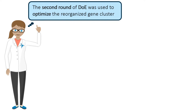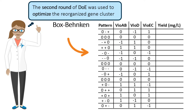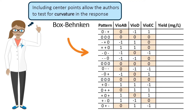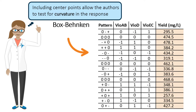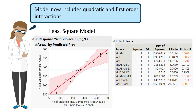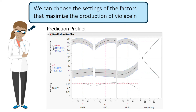A second round of DOE was performed to find the optimal expression level of the reorganized gene cluster. For optimization, a Box-Behnken design was used to produce the following table. Unlike before, this table includes center points at zero where the gene components are driven by a medium promoter. By including center points, the authors were able to test for any curvature in the response. Once the yield is recorded, a least squares model that includes quadratic and first-order interactions is generated. A prediction profiler is also included in the model, allowing the authors to find the optimal promoter settings and maximize the production of violacein.